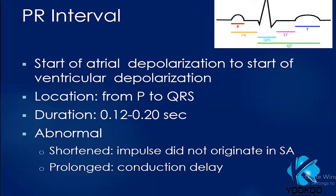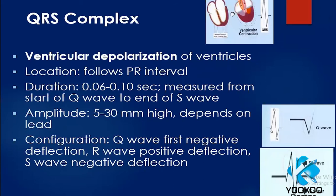The PR interval is an indicator of atrial depolarization. This period spans from atrial depolarization to the start of ventricular depolarization, including the pause — from the P wave to the beginning of the QRS. Its duration is usually 0.12 to 0.20 seconds. If the PR is prolonged, that is what we call first-degree AV block, meaning conduction is delayed as it passes from the atria to the ventricles.